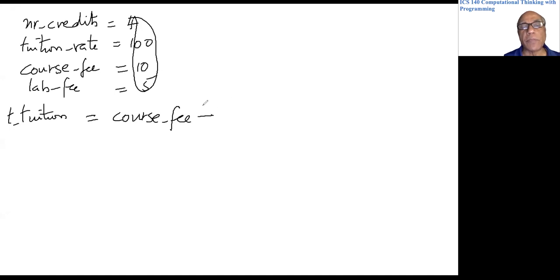So our formula would be course fee plus lab fee plus number of credits times tuition rate. So this would be the formula. So I write that formula on the right hand side. This is a valid Python statement. The right hand side has a formula for the computation of the total tuition. Whatever numbers are here will be used to do the computation. Whatever it gets would be stored in total tuition.